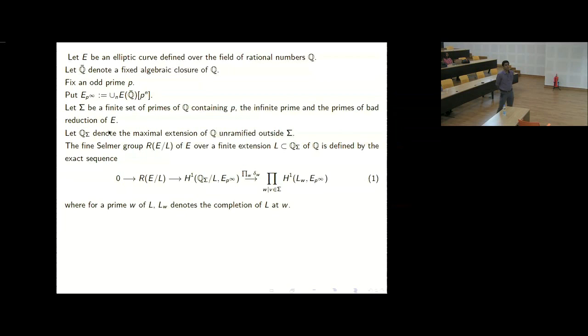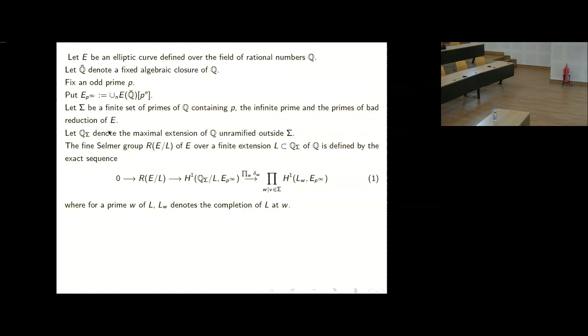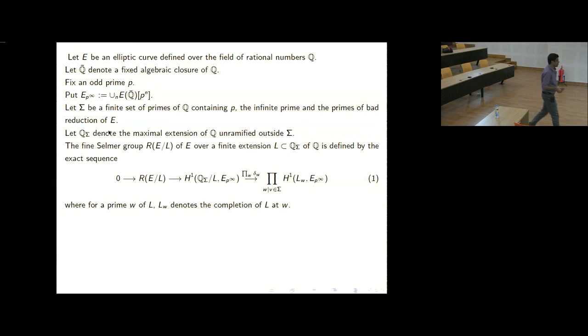We consider P-power torsion points of E defined over Q-bar. This is a Galois module — the absolute Galois group of Q acts on this group, and if you put a discrete topology on this, then this action is continuous. We also consider a set of primes of Q and call it sigma. Sigma has the property that it contains the prime P, the infinite prime, and the primes of bad reduction of E.